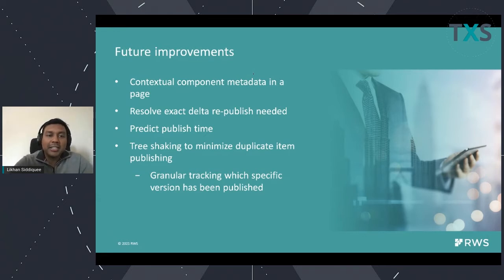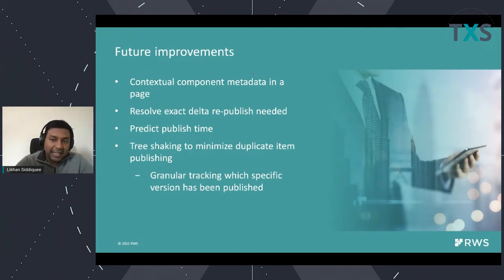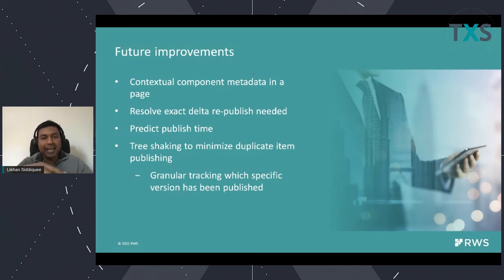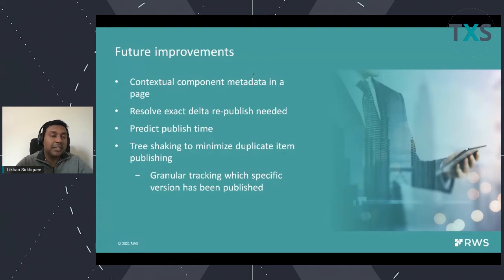This will also allow us to predict publish timing. We will be doing further work on optimizing publishing by tree shaking — ensuring that if an item has already been published, we will not include it again. This is only possible because templates are no longer mutating data. Historically, templates could change data, so if you published the same component using the same template multiple times, the output could have been different — for example, if the template put in a timestamp.